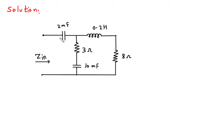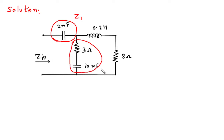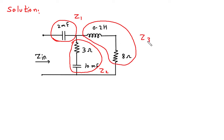Now let's say this is impedance Z1, this is impedance Z2, and this is impedance Z3. From this we can say Z1 is equal to this capacitor only.